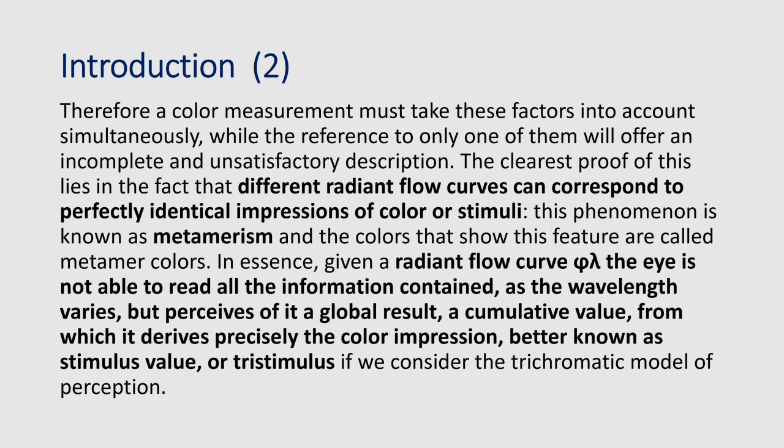The clearest proof of this lies in the fact that different radiant flow curves can correspond to perfectly identical impressions of color or stimuli. This phenomenon is known as metamerism, and the colors that show these features are called metameric colors. In essence, given a radiant flux curve phi-lambda, the eye is not able to read all the information contained as the wavelength varies, but perceives a global cumulative result from which it derives the color impression.